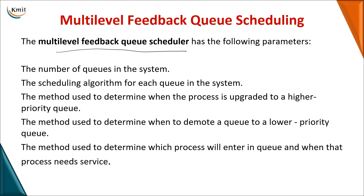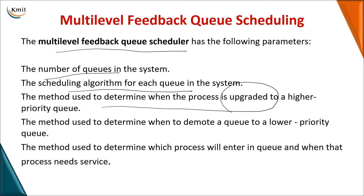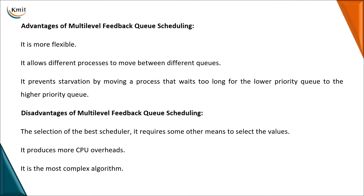The multi-level feedback queue scheduler must decide: the number of queues, the scheduling algorithm for each queue, the method for upgrading a process to a higher priority queue, the method for demoting a process to a lower priority queue, and the method that determines when a process enters the queue and what type of service is provided.